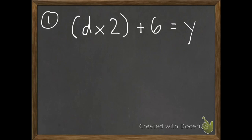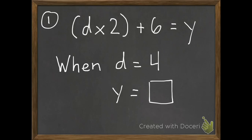Here's one to try on your own. We have d times 2 in parentheses plus 6 equals y. So when d equals 4, what does y equal? Put the 4 in where the d is. Make sure you use your order of operations. Parentheses are first. Figure it out and then move on to number 2.